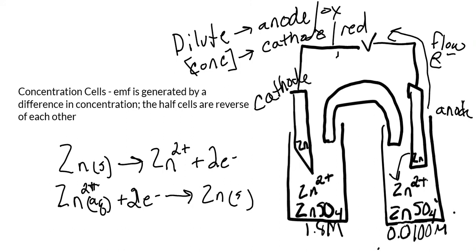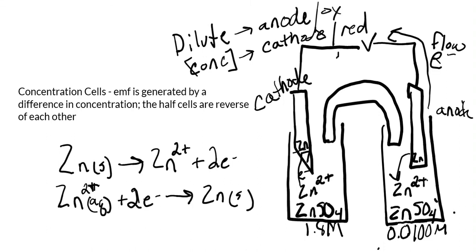And then over here is my cathode. The electrons are going to come down here and the zinc 2+ is going to grab those electrons and become that zinc zero. We are still flowing - electrons are flowing from anode to cathode. The only difference here is that when we find our anode, we're going to find the one that is dilute.